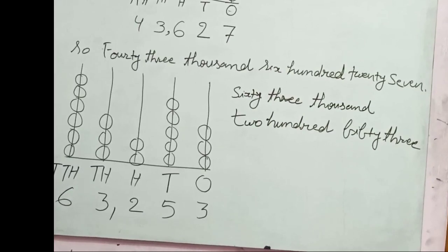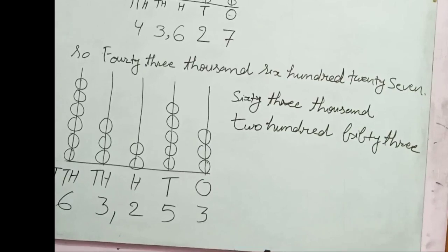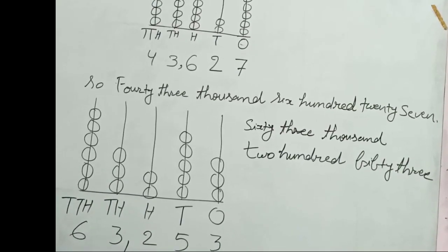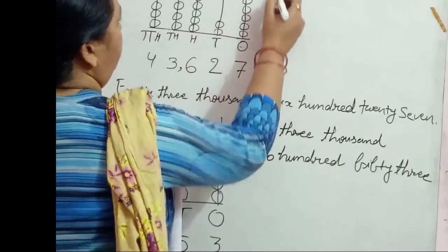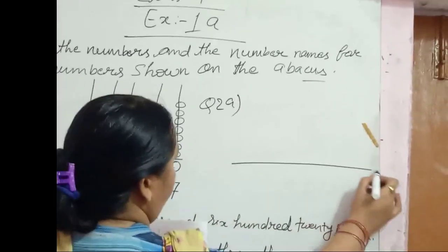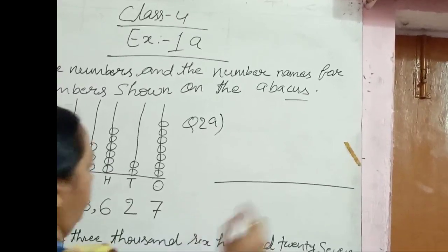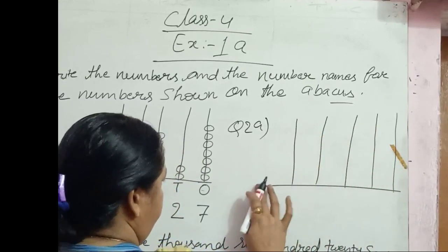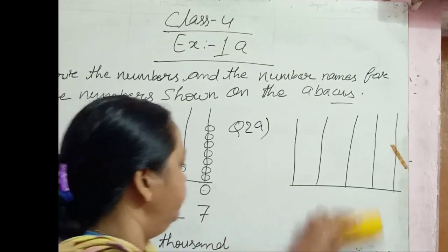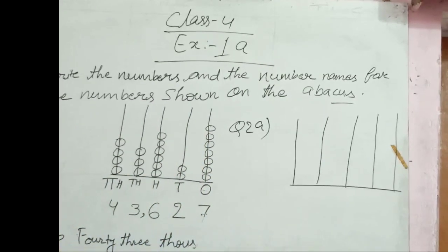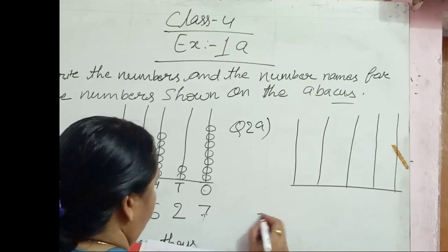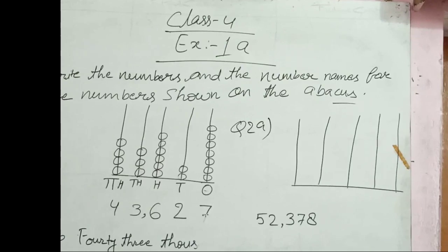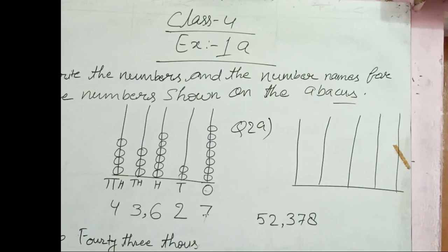The second question is just opposite of the first. Here the digit form is given. Do the work as question 2A. Here the abacus is given with 5 sticks. The question is given in digit form: 52,378.